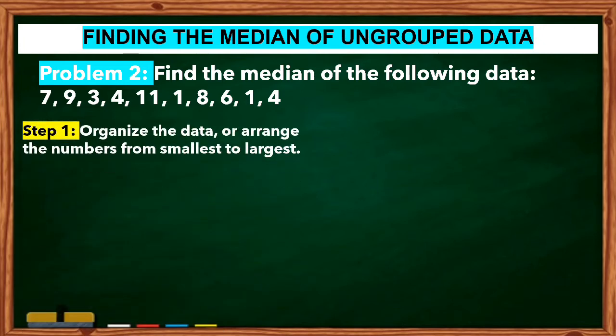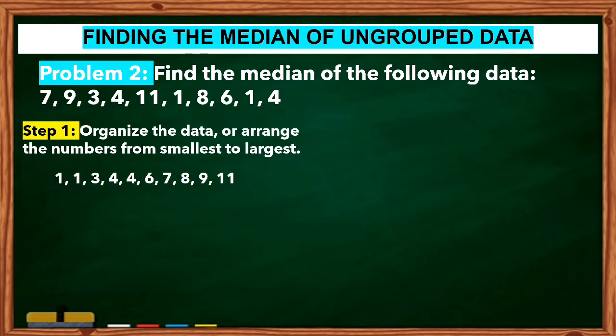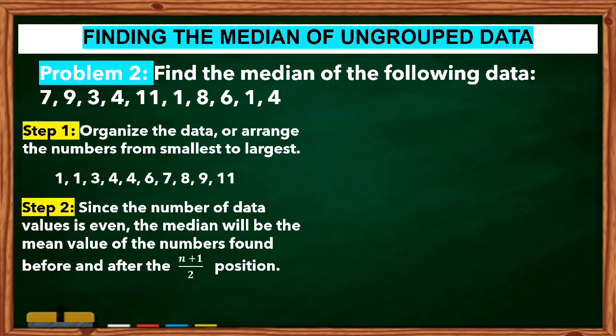Step 1: Organize the data from smallest to largest: 1, 1, 3, 4, 4, 6, 7, 8, 9, 11. Step 2: Since the number of data values is even, the median will be the mean value of the numbers found before and after the (n + 1) / 2 position. So, (10 + 1) / 2 = 11 / 2 = 5.5.